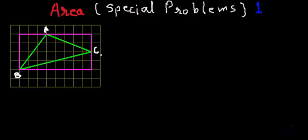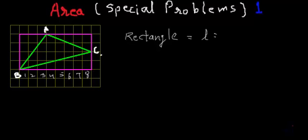The rectangle has a length of 1, 2, 3, 4, 5, 6, 7 and 8 — so it has a length of 8 units. And what about breadth? The breadth is 4 units. So the rectangle in which I have inscribed that triangle has length 8 units and breadth 4 units.